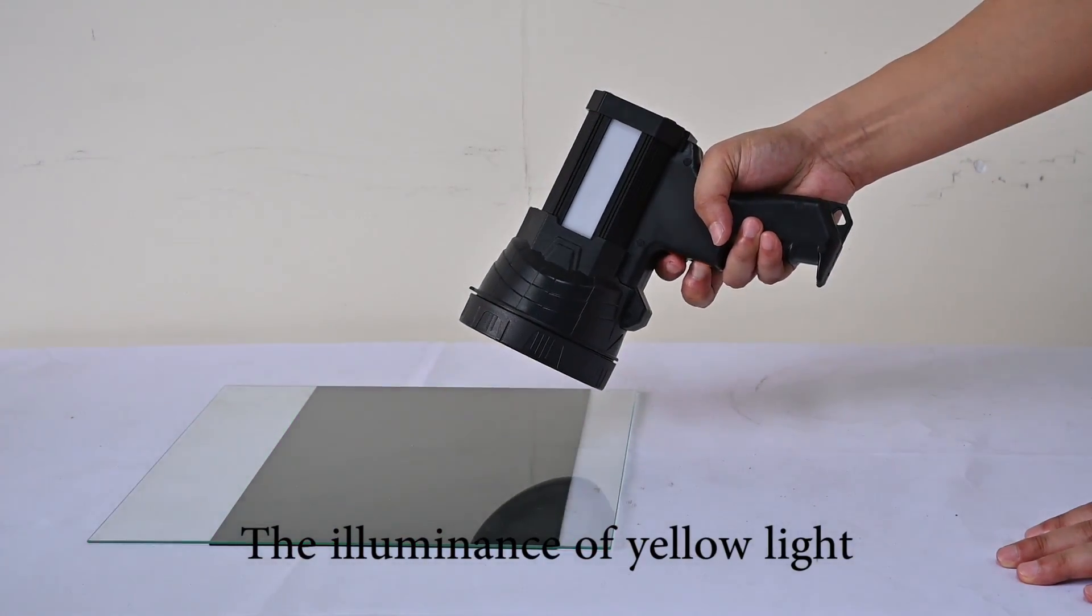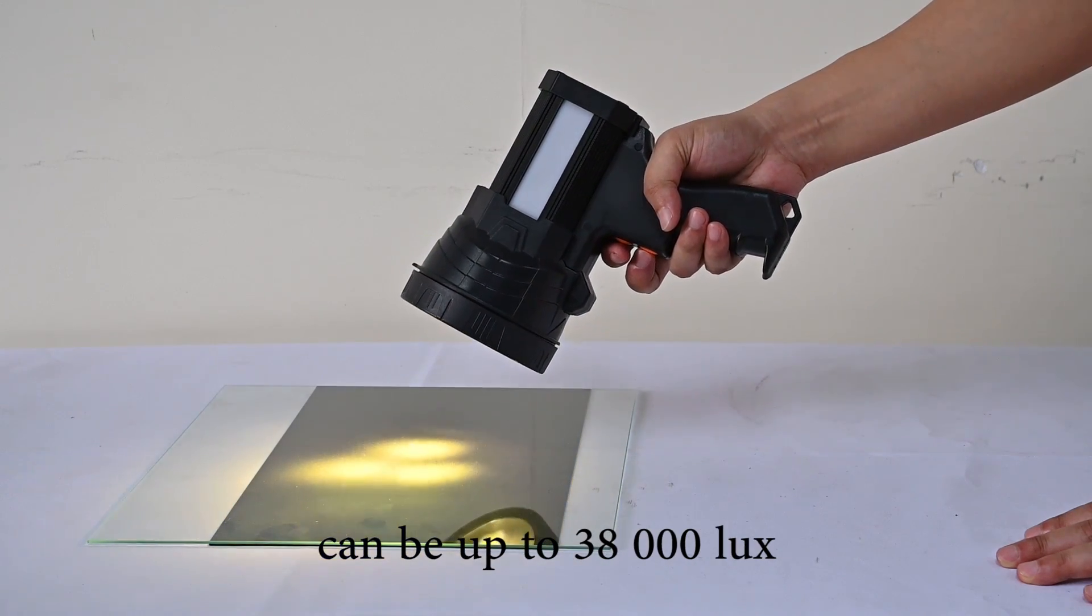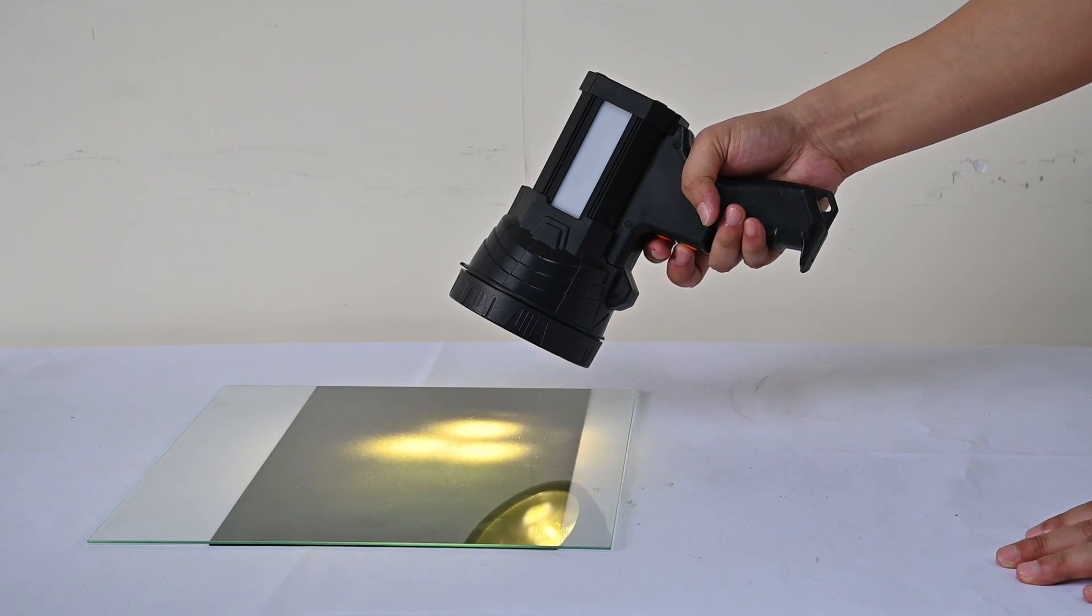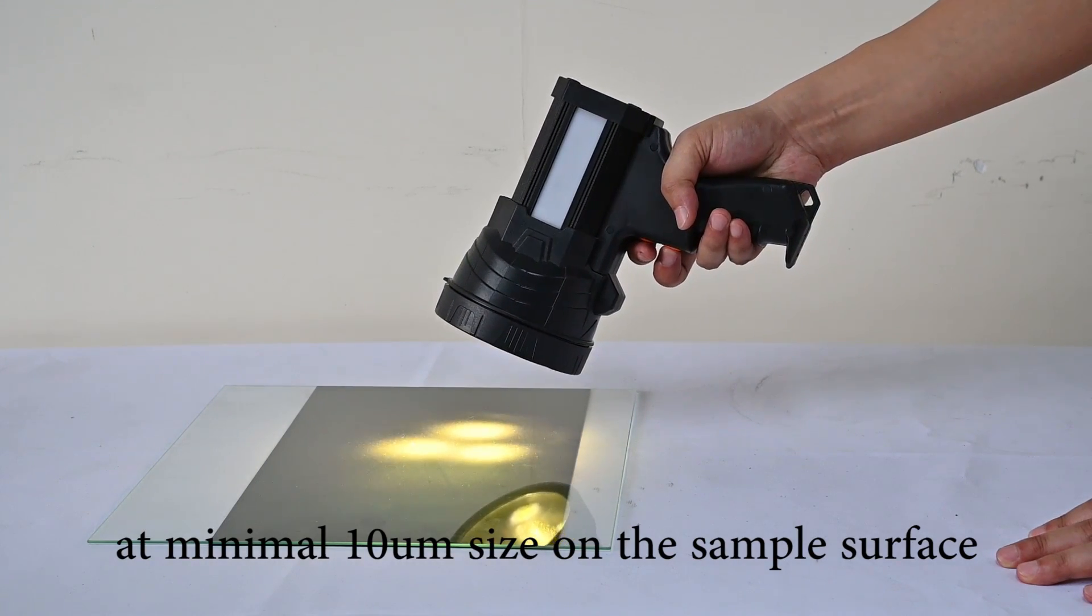And the illuminance of yellow light could be up to 30,000 lux. It can detect the defect at a minimum 10 micrometers on the sample surface.